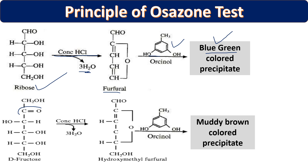This furfural reacts with orcinol to give a blue-green color precipitate. Blue-green precipitate formation is indicative of the presence of ribose sugar. If we are having hexose like fructose — a ketone-containing sugar — any hexose (ketose or aldose) when reacted with HCl will give hydroxymethyl furfural. This hydroxymethyl furfural reacts with orcinol and gives us a muddy brown precipitate.